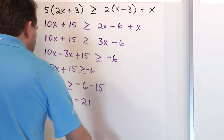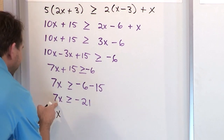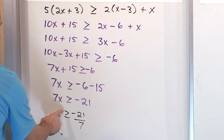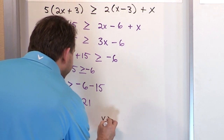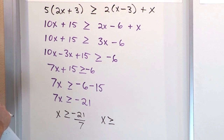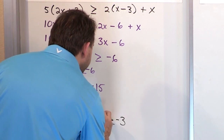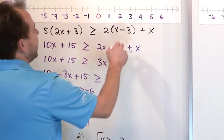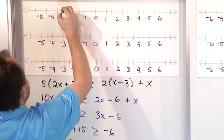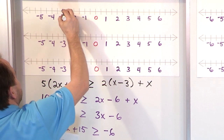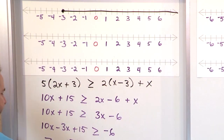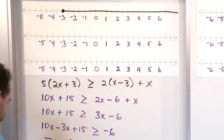Finally, we divide by 7 to get x by itself. Negative 21 divided by 7 — because negative divided by positive is negative — gives us x greater than or equal to negative 3. That's the answer. We find negative 3 on the number line. It can be equal to negative 3, so we use a solid circle, and it's greater than or equal to negative 3, so we shade all values to the right on to positive infinity.